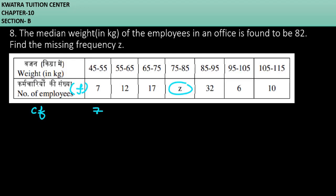After frequency, we will find cumulative frequency. First one is 7, then 7 plus 12 gives 19, 19 plus 17 gives 36, 36 plus Z, then 36 plus 32 plus Z gives 68 plus Z, 68 plus 6 gives 74 plus Z, and 74 plus Z plus 10 gives 84 plus Z.